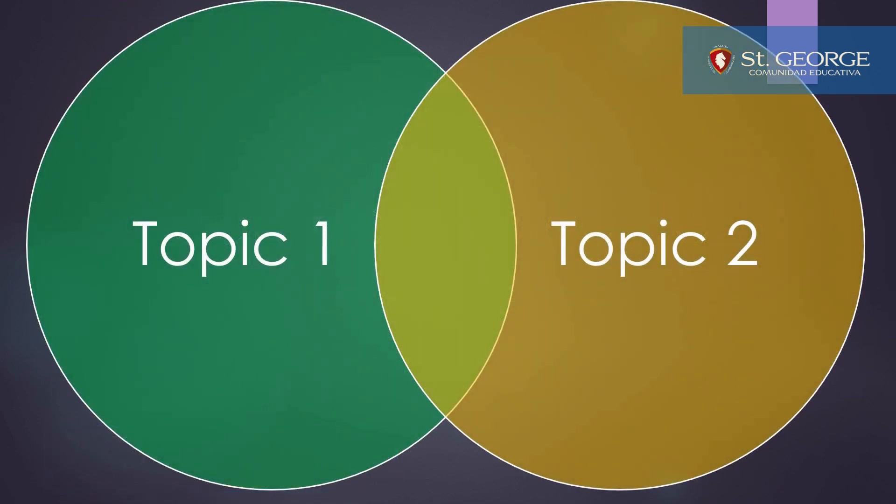This is an example of a Venn diagram or a compare and contrast chart. You have to add as many circles equivalent to as many concepts that you are going to compare.